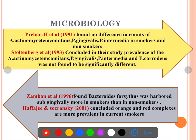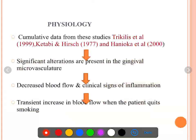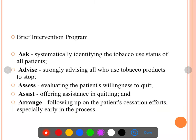The microbiological part, immunology part, and physiology part are very important — these lines have to be stated as they are. For immunology, studies show what happens in periodontal health. Everything can be presented in flow chart format, and writing your answer in flow charts is most important.